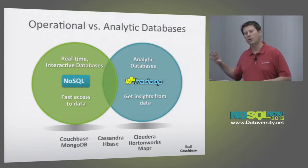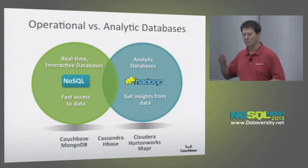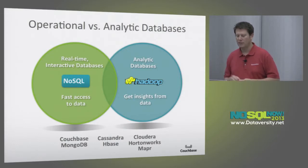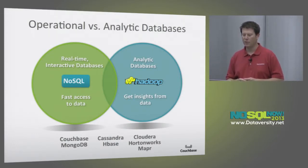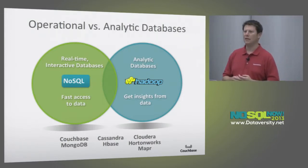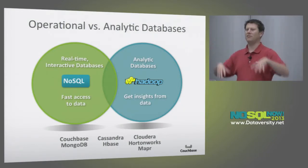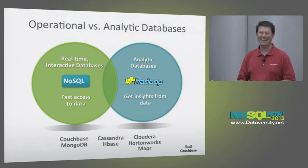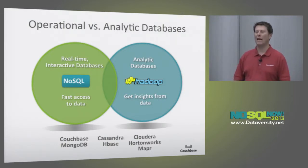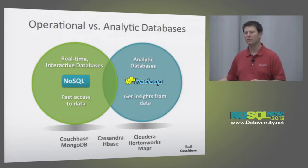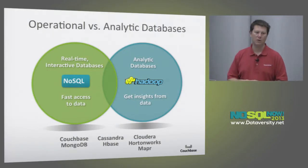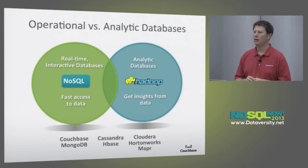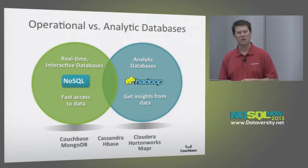They let you do lots of analytics type things that are very hard to do with an operational database. And then on the far right, a friend of mine — Dan Templeton at Cloudera — has a good way of putting it with Hadoop. He likes to call Hadoop the big data Petri dish: you just throw a bunch of stuff in it and whatever kind of grows and crawls out is sort of interesting. These are more analytic databases — Cloudera, Hortonworks, MapR, companies like that mostly in the Hadoop space.